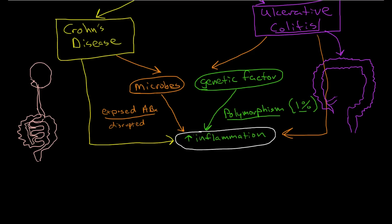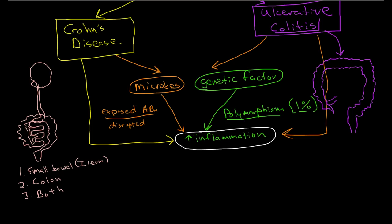Crohn's disease can affect everything from the mouth to the anus. There are three different possibilities: the most common is Crohn's disease affecting only the small bowel, usually the ileum preferentially. Another possibility is that it affects only the colon. The third is that it involves both. In rare situations — usually when it involves both the colon and small bowel — it can also involve the esophagus, the stomach, and even the mouth.